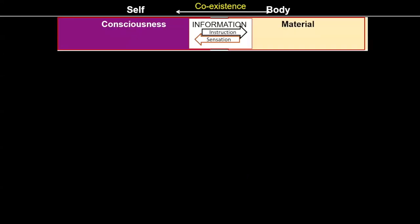In steps 1 to 4, first we are trying to observe that self and body are two distinct realities. I exist and body exists. I exist because I am able to see activities going on in me. Body exists because I am able to see activities going on in the body. Based on this direct observation, I can say I and body both exist.